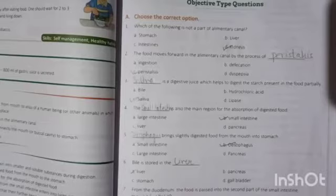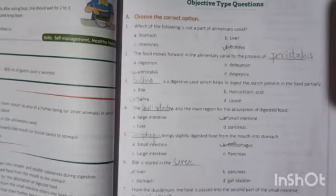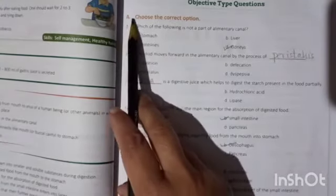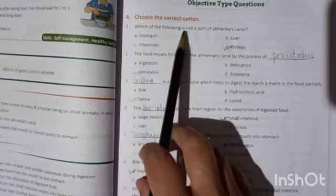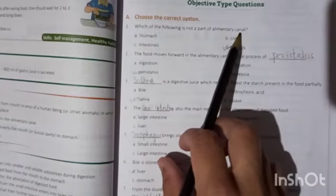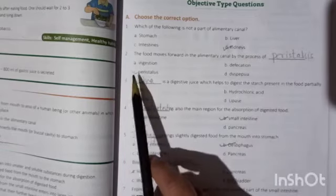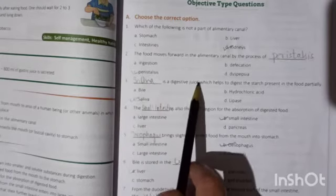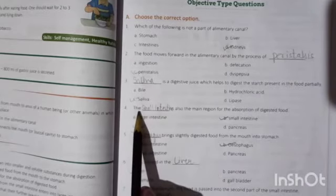Now students, open your book and open page number 65. And let's confirm answers of objective type questions. The first is, part A is choose the correct option. The first one is, which of the following is not a part of elementary canal? The answer is kidneys. Because stomach, intestines and liver, they all are part of elementary canal. The food moves forward in the elementary canal by the process of peristalsis. C1, saliva is a digestive juice which helps to digest the starch present in the food partially. The answer is saliva.